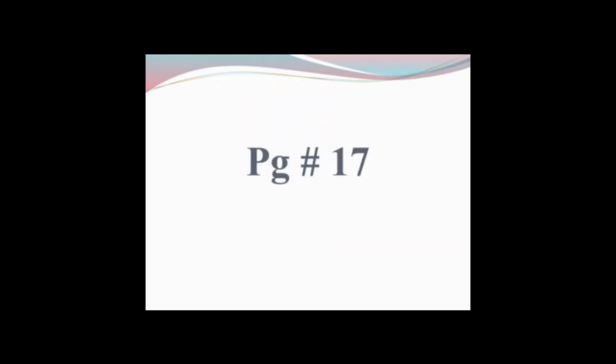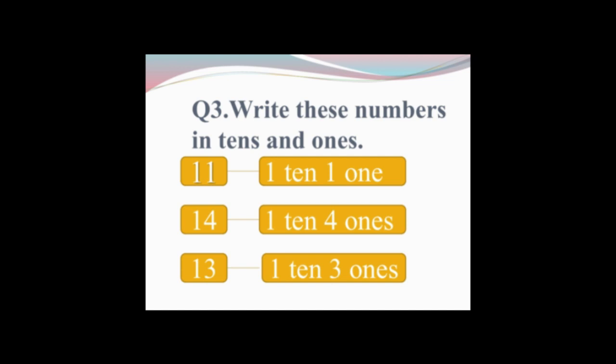Now open your Countdown book, page number 17, question number 3. Question 3 is: write these numbers in tens and ones. The first number is 11 — we will write 1 ten and 1 one. The next number is 13. You tell me what comes with 1 and what comes with 3. 1 ten comes with 1 and 3 ones come with 3.